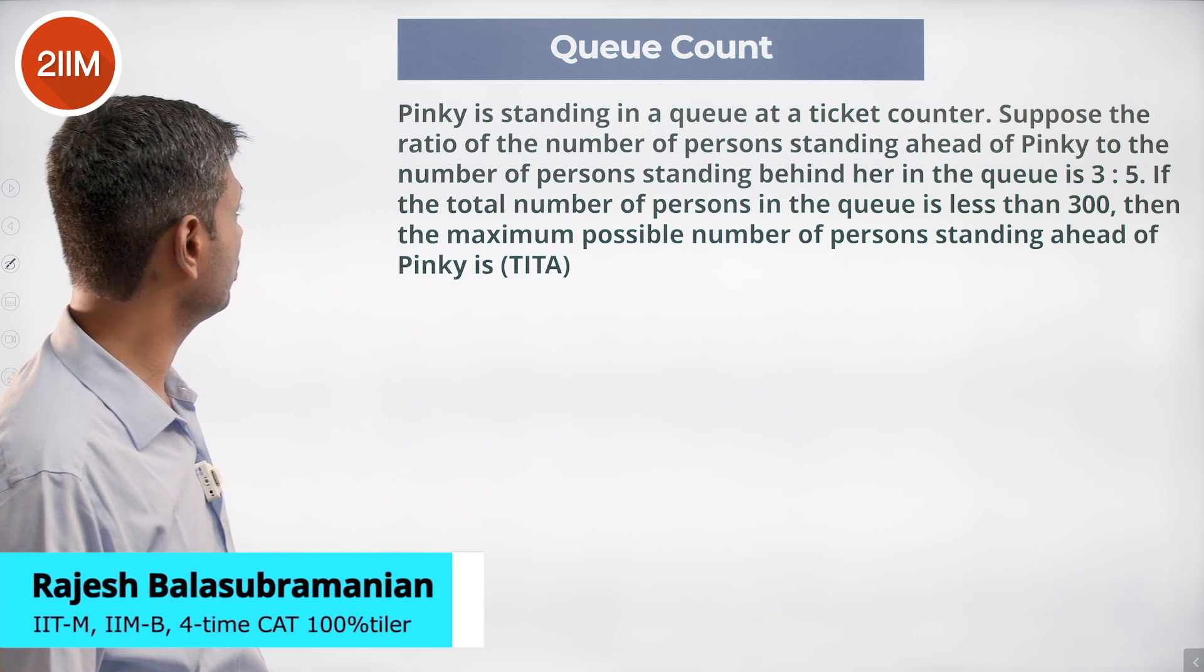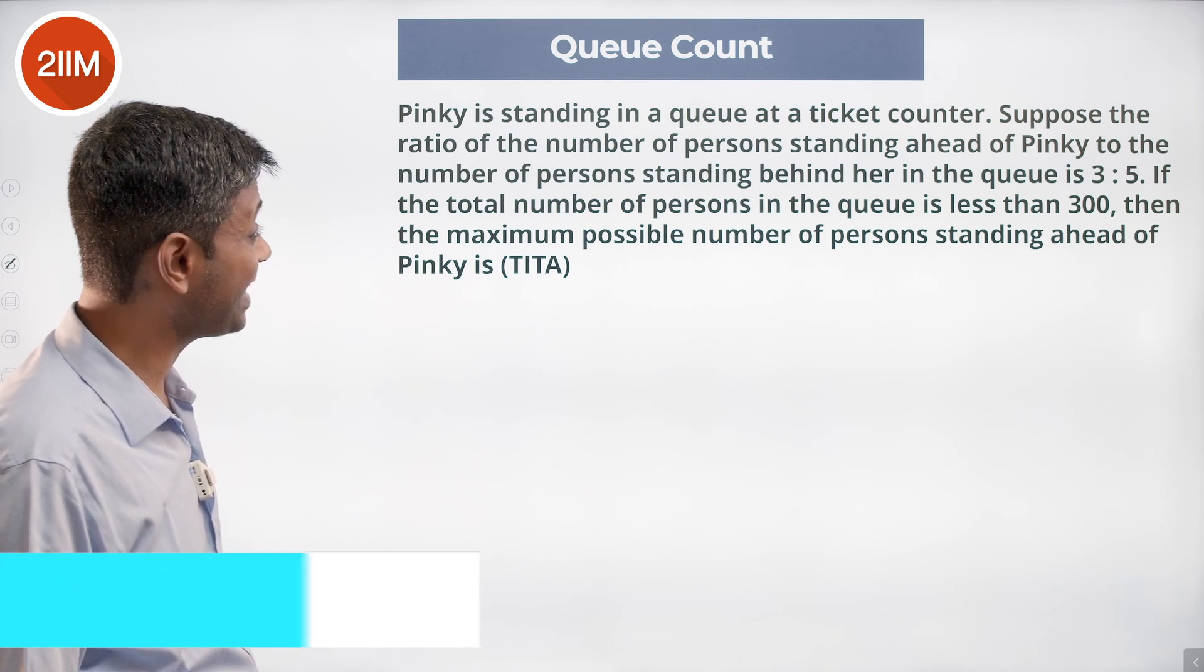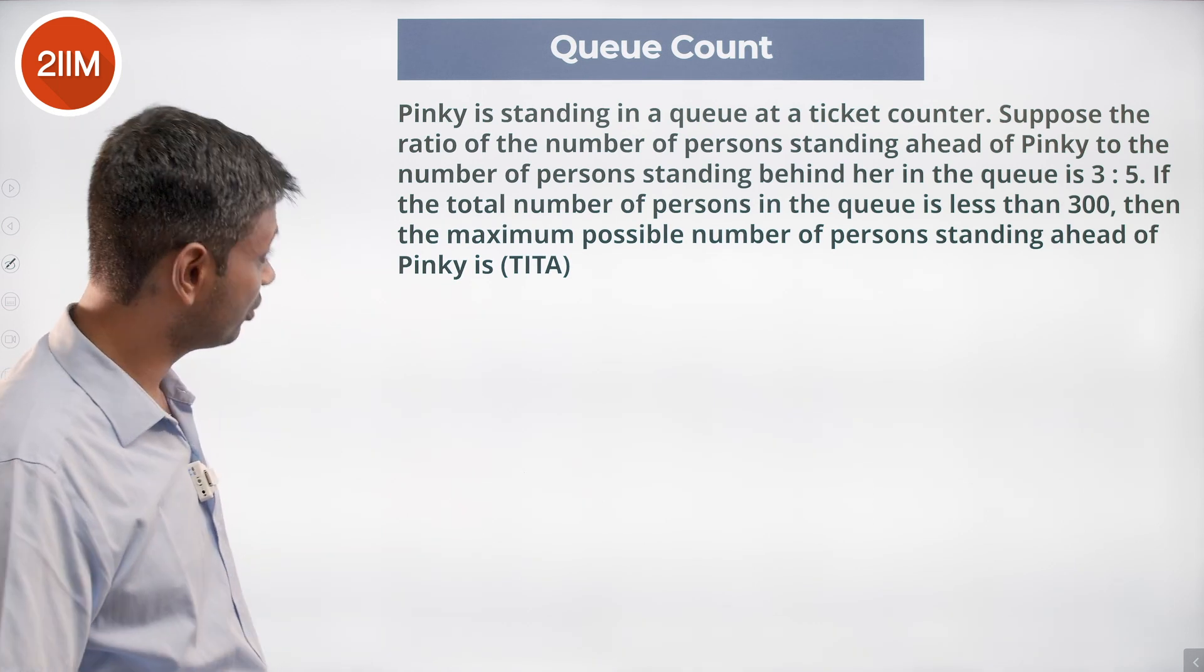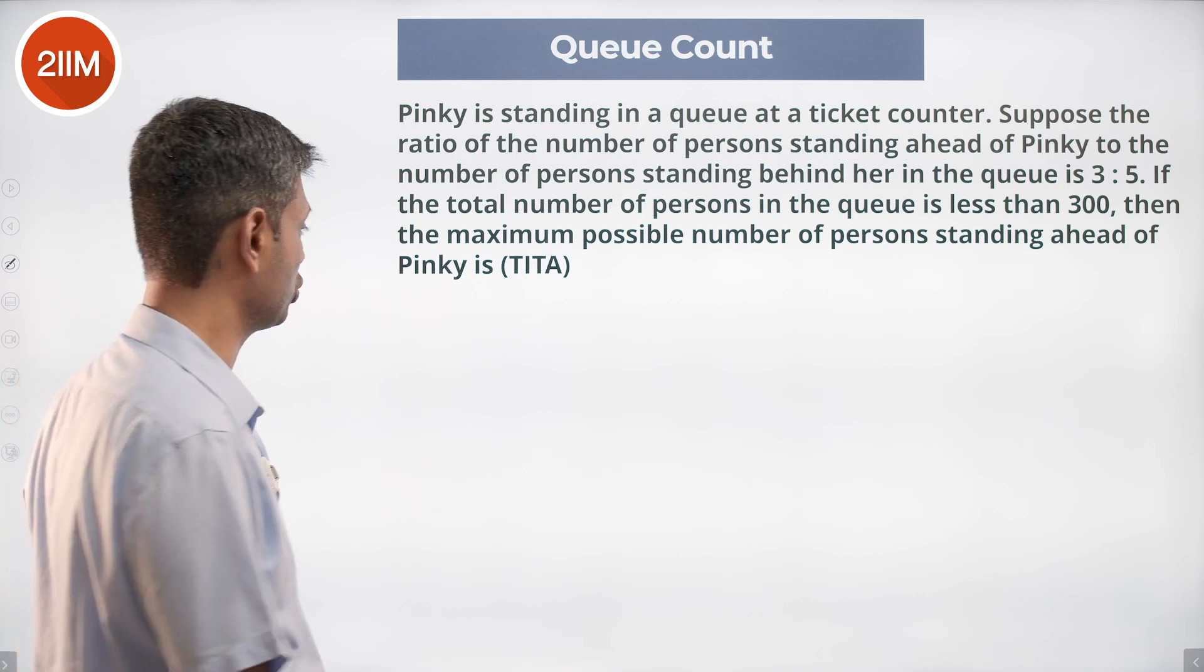Pinky is standing in a queue at a ticket counter. Suppose the ratio of the number of persons standing ahead of Pinky to the number of persons standing behind her in the queue is 3 to 5.